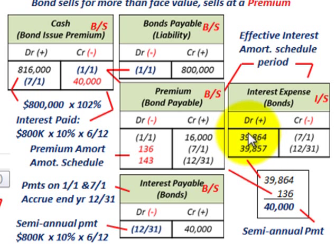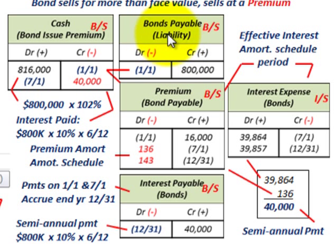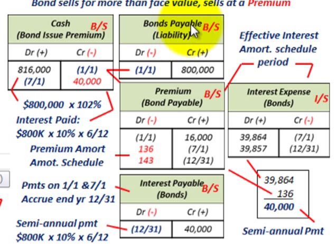So what we've gone through here is how you deal with the effective interest rate for typical bonds and how you amortize the bond. We covered calculating the effective interest rate when you know the bond issue price, and also calculating the bond's issue price or sales price when you know the effective interest rate.